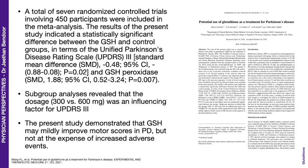Here is a paper published in 2021 on the potential use of glutathione as a treatment for Parkinson's disease — a meta-analysis involving seven randomized controlled trials with 450 participants. The authors state a statistically significant difference between the glutathione group and the control group on the UPDRS 3 scale, which is used frequently in Parkinson's disease. They also state that glutathione mildly improved motor scores in Parkinson's disease without increased adverse events.